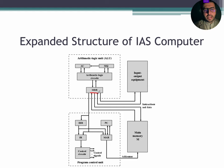The first one is MBR. MBR stands for memory buffer register. It contains a word to be stored in memory or sent to the IO unit, or it is used to receive a word from memory or from the IO unit.